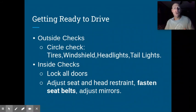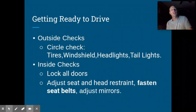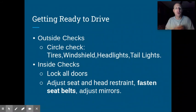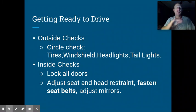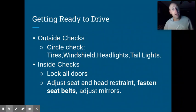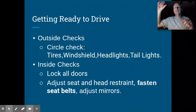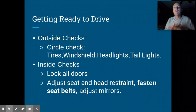Inside checks: lock all doors — it's important. Most cars do this automatically, but if yours doesn't, do it manually. If your doors are locked, they're more likely to stay closed in a crash, and doors that stay closed generate a stronger passenger compartment. Adjust the seat and head restraint — especially if it's not your car — so you can reach the wheel, gas, and brake comfortably. Then fasten your seat belt and adjust your mirrors. All of these things should be taken care of before you start driving.